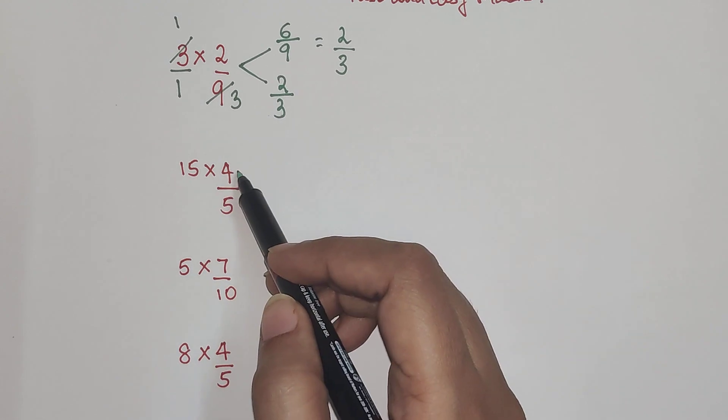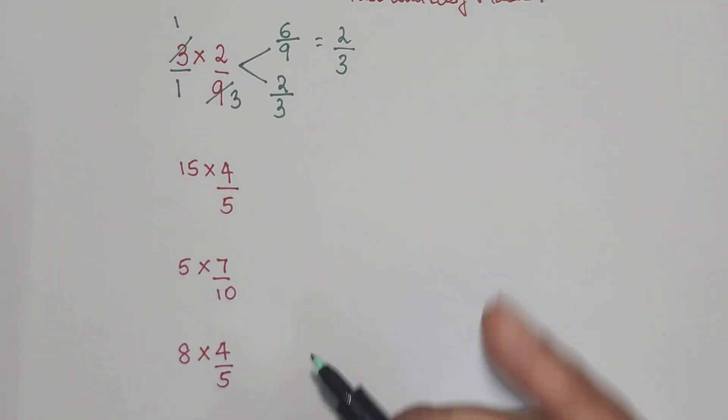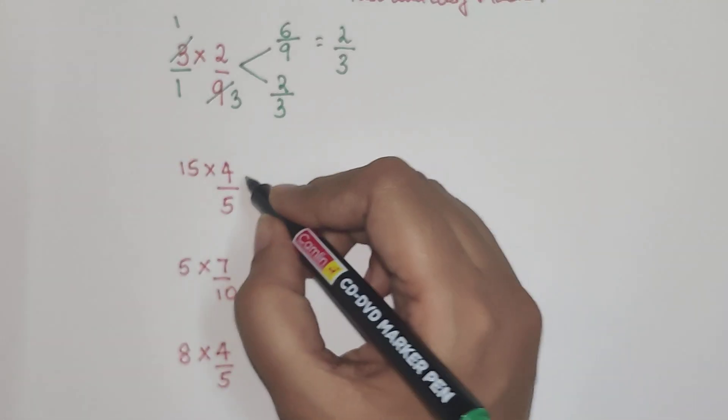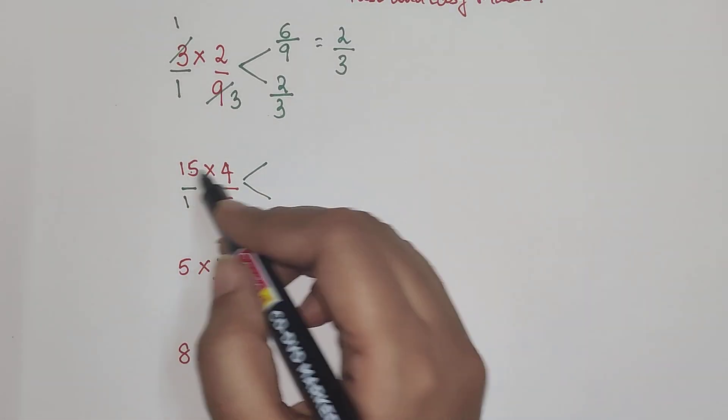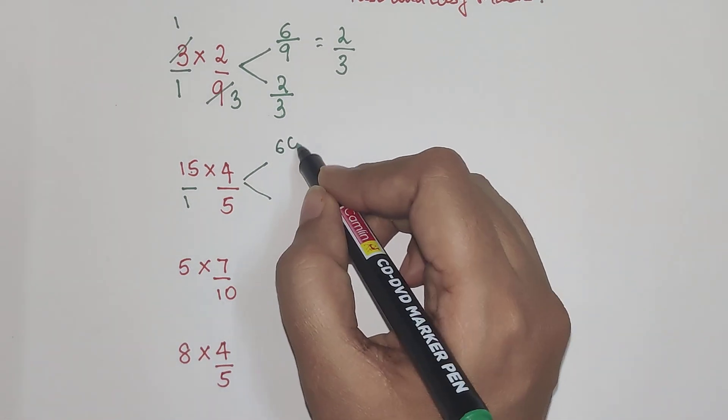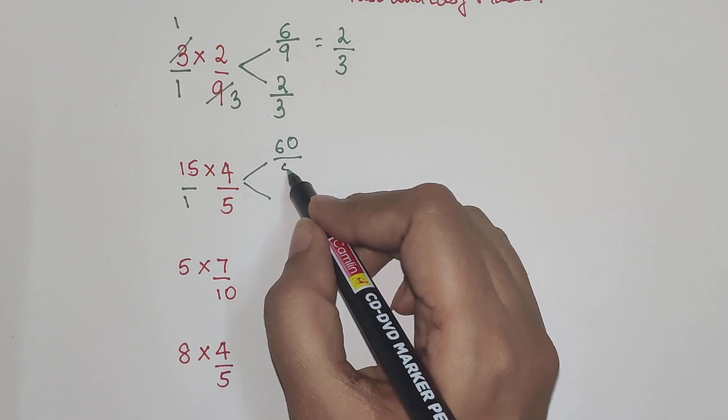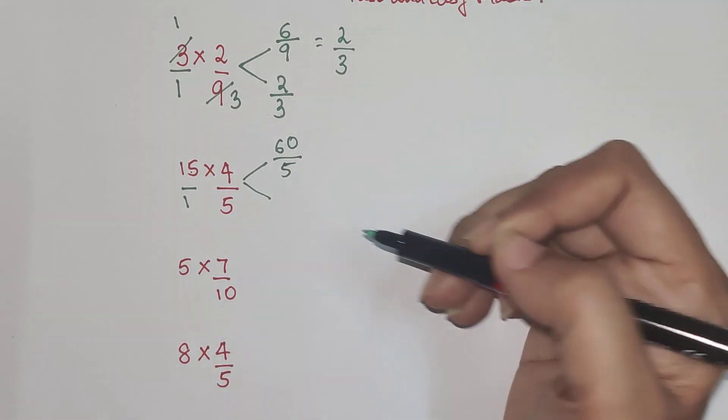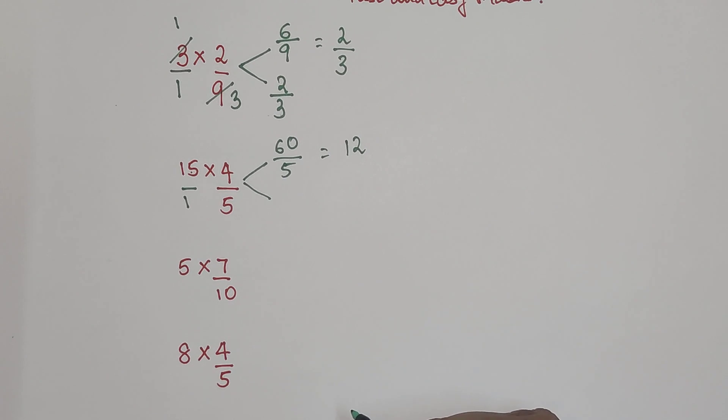So then we have 15 into 4 upon 5. So again I am going to do two methods for this sum as well. So this is 15 upon 1. So 15 into 4 gets you 60. Then 1 into 5 gets you just 5. So 60 divided by 5 is nothing but 12.